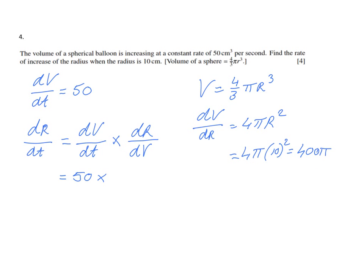But we're not interested in dV/dr. We need to know dr/dV, which is, as you can see, the reciprocal. It's the reciprocal of dV/dr. So I'm not going to multiply 50 by 400 pi. I'm going to multiply 50 by the reciprocal, so 1 over 400 pi.